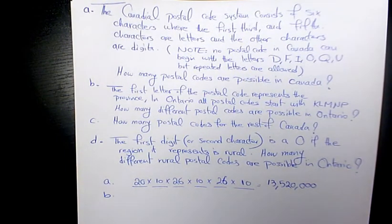Second part, it says the first letter of the postal code represents the province. In Ontario all postal codes start with K, L, M, N, and P. How many different postal codes are possible in Ontario?